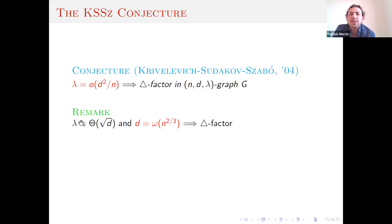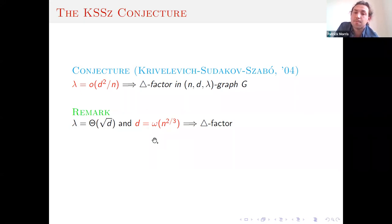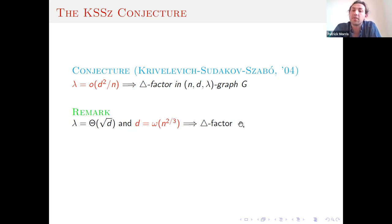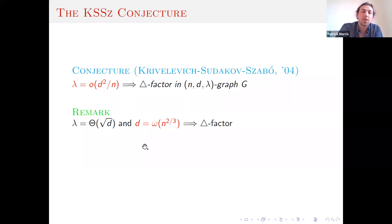To simplify things with three parameters, we can focus on optimally pseudorandom graphs where lambda is of the order of root d. Then this becomes a density question: the condition says that as soon as your degrees are at least n^(2/3), you'll get a triangle factor. Compared to Corradi-Hajnal where you need degrees to be linear, we're now capturing much sparser graphs, and calculating the second eigenvalue can be done quickly and efficiently.